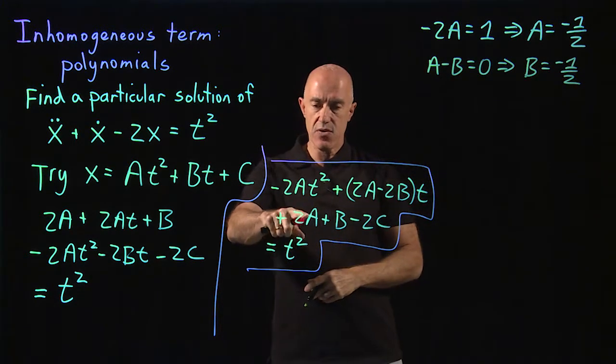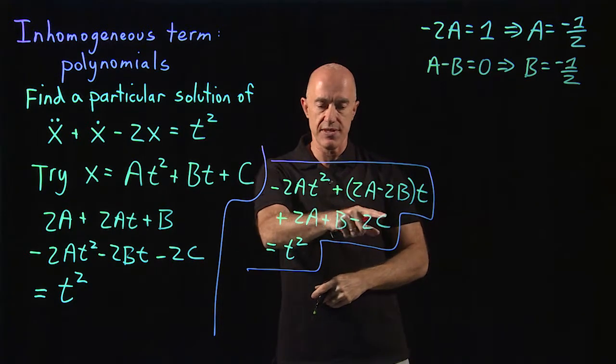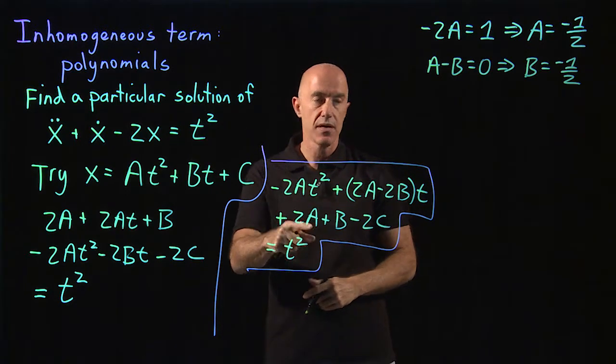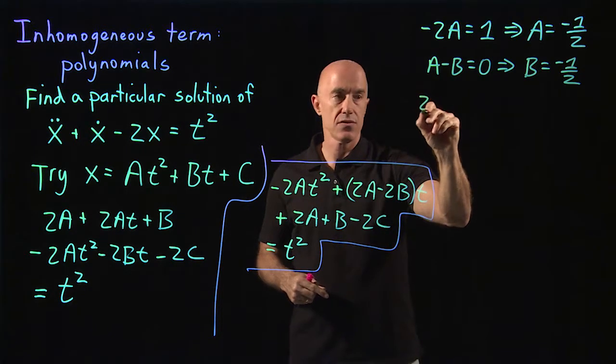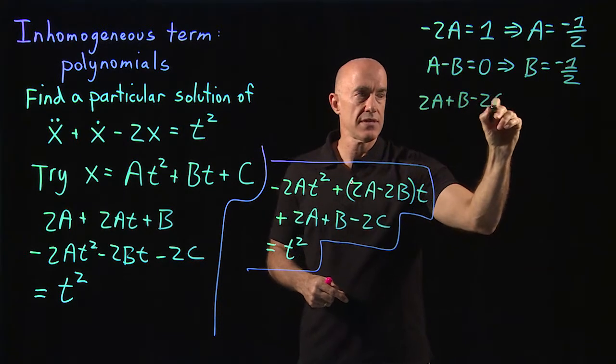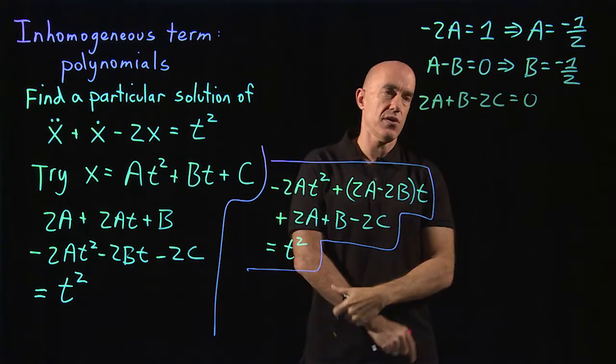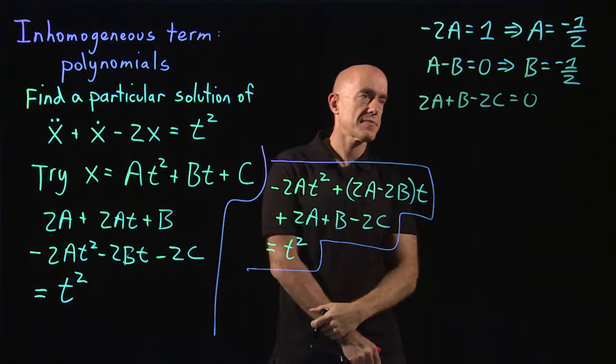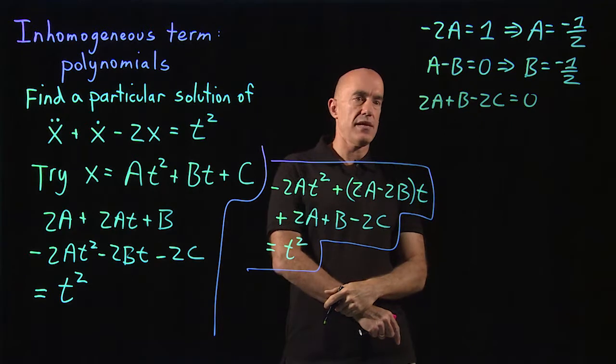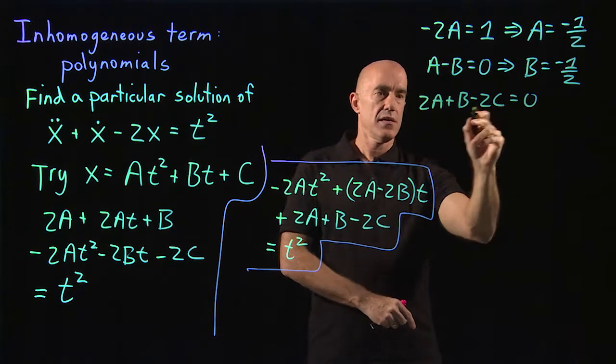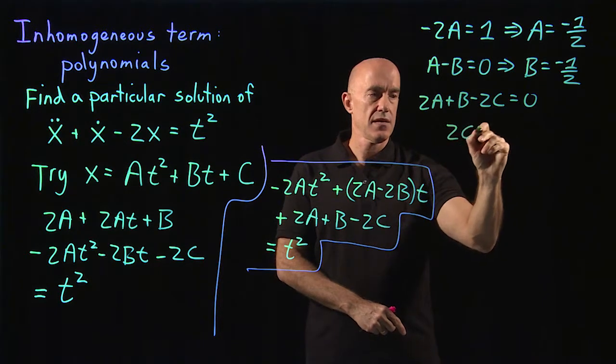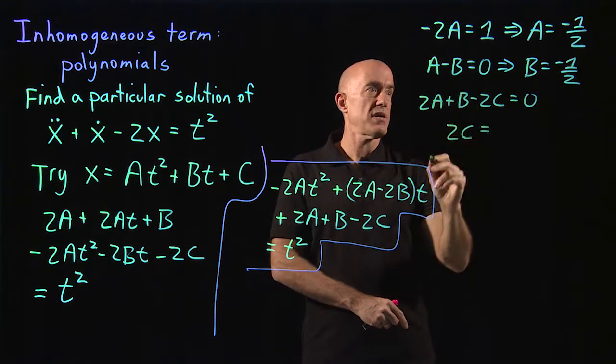And the last equation is 2a plus b minus 2c equals 0 because there's no constant term on the right-hand side. So 2c is equal to 2a plus b.